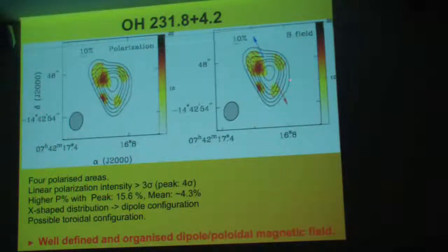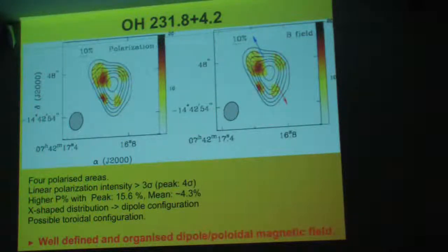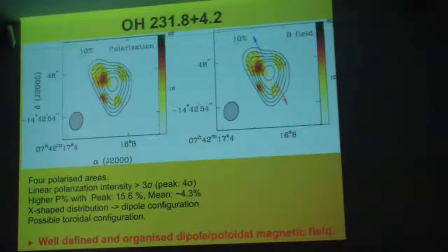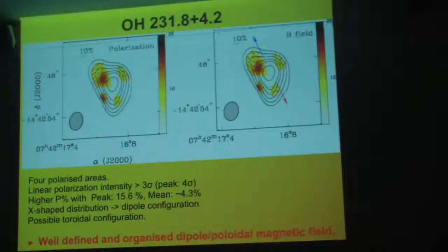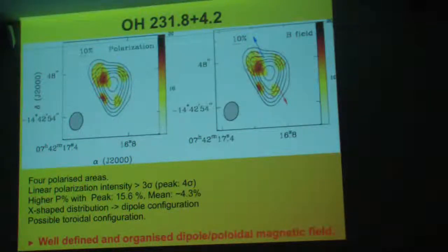That X-shaped distribution is generally associated with a poloidal configuration. But we have a set of vectors here and here that might belong to a toroidal configuration — like a disk or toroidal configuration. So, the same as CRL 618 in terms of what you have: a well-defined and well-organized poloidal, or possibly toroidal, magnetic field, because in that direction you have the outflow.